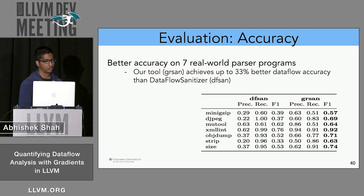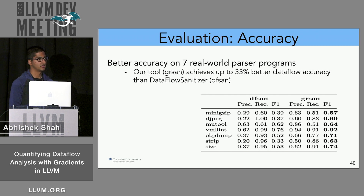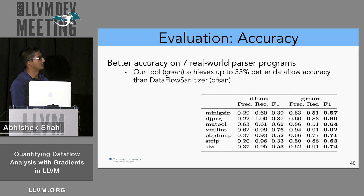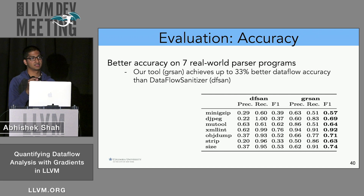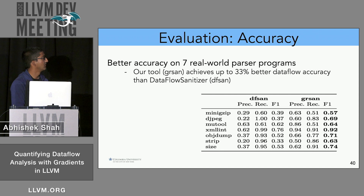For evaluation, our tool performs better than DFSAN, the data flow sanitizer, by up to 33%. Our evaluation methodology identified valid data flows in a program by marking all input file bytes, editing input bytes, and checking whether changes produced a change in branch coverage — which we considered a valid data flow as an approximation of ground truth. We then checked whether our tools found these same data flows.